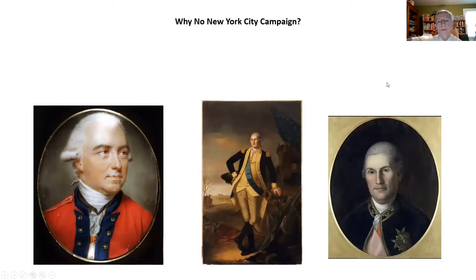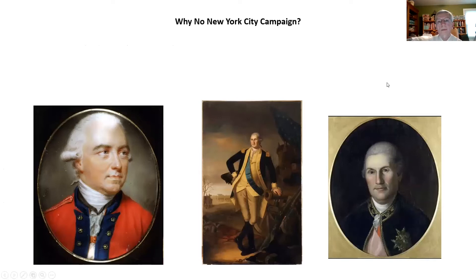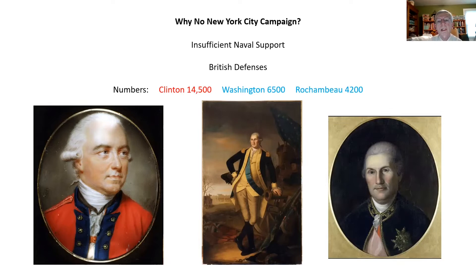Why not New York? Briefly: one, de Grasse's fleet hadn't arrived there. The city was the very lower part of Manhattan at this time, and without French naval support it was going to be difficult to capture New York City. Also, the British had occupied New York City since 1776 and had fortified it. And then finally, even with French support, the British actually outnumbered the Franco-American army. So New York just proved too tough a nut to crack. And ultimately, rather than try this, the two armies would march south and execute the Yorktown operation.